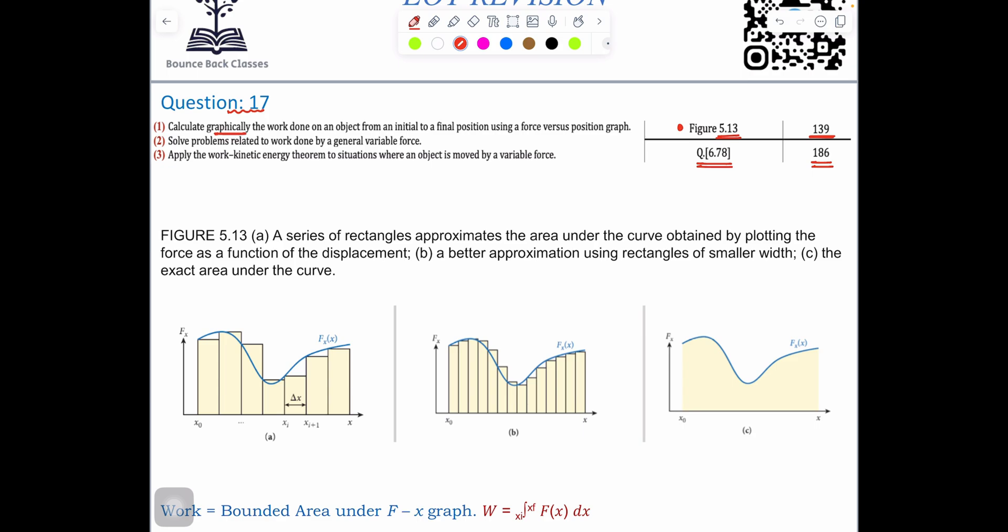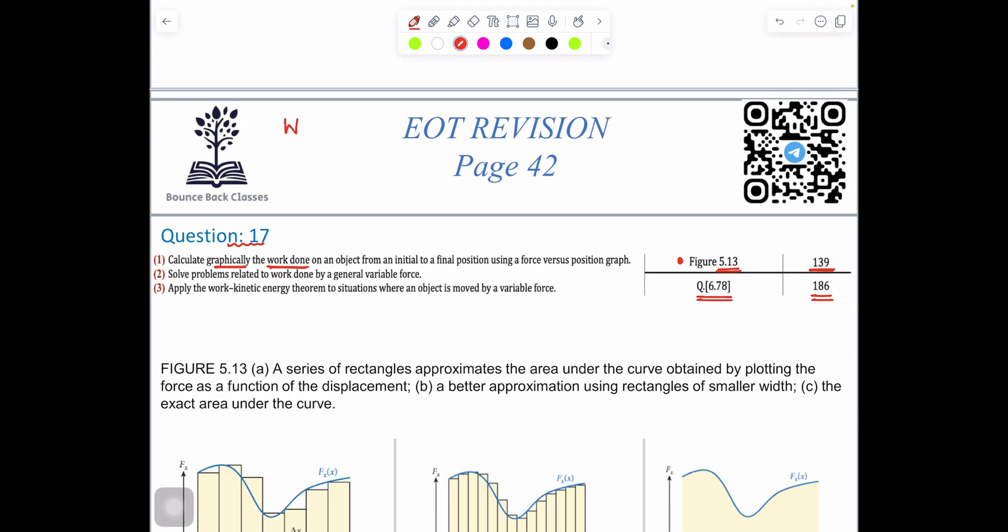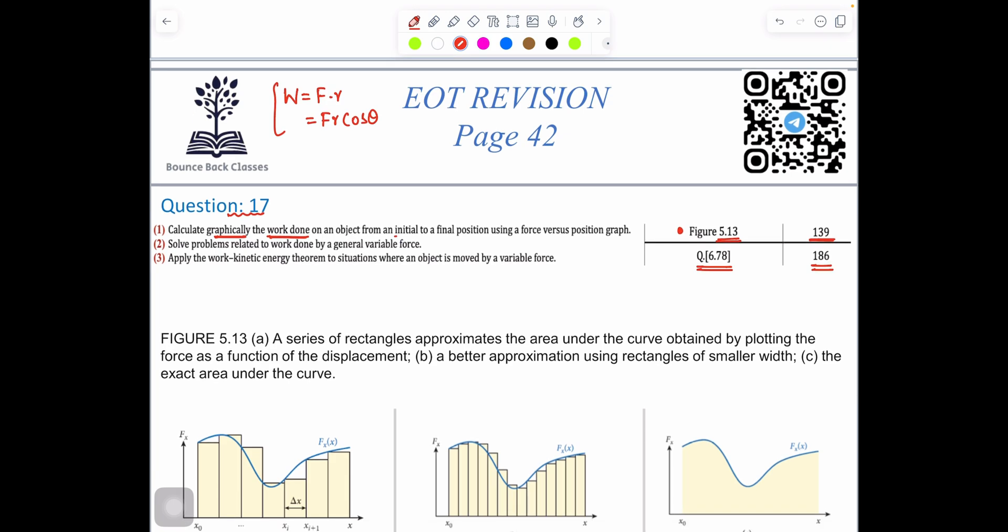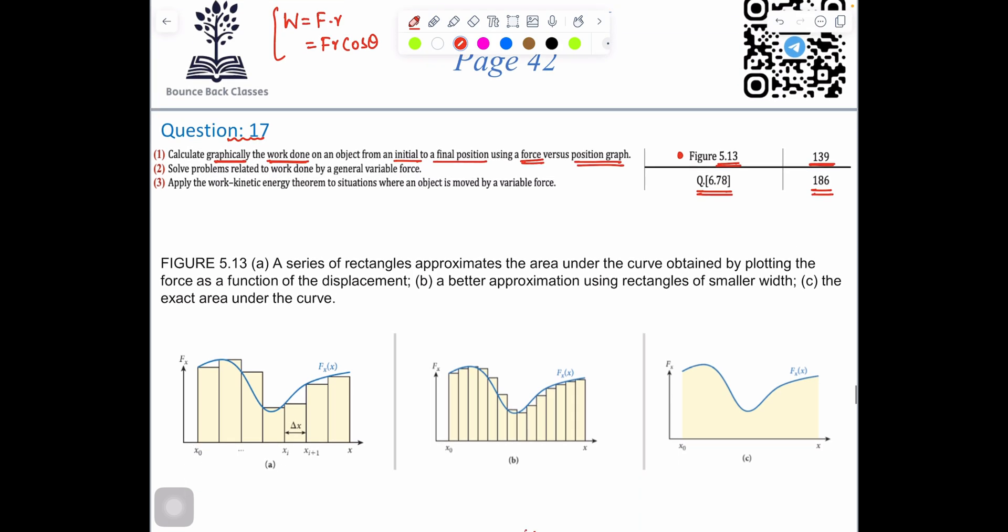Let's read the question. Calculate graphically the work done. You should know work done is F dot r, which equals F r cos θ. This is the general formula. We will solve with the graphical method also, on an object from initial to final position using the force versus position graph. We will solve problems related to work done by a variable force and apply the work kinetic energy theorem to situations where an object moves in a variable force.